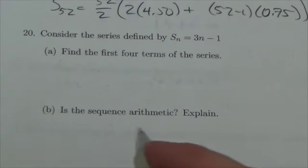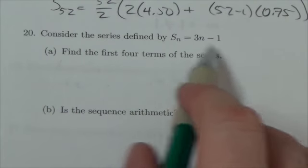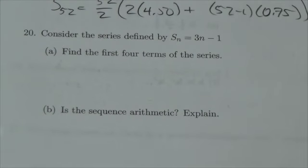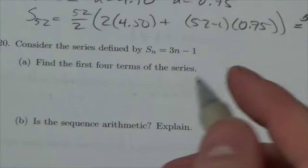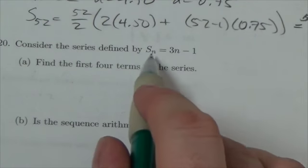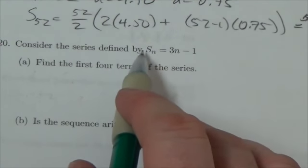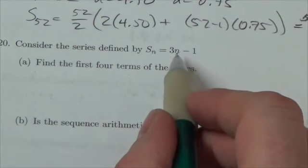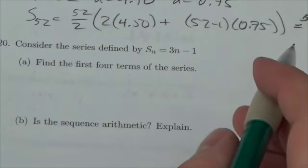Okay, here we go, question 20. Find the first four terms of this series here. Now the idea that we're going to put forward with this one is you're given an equation for the summation of a sequence, or for a series I should say, and it simplifies down to 3n minus 1.